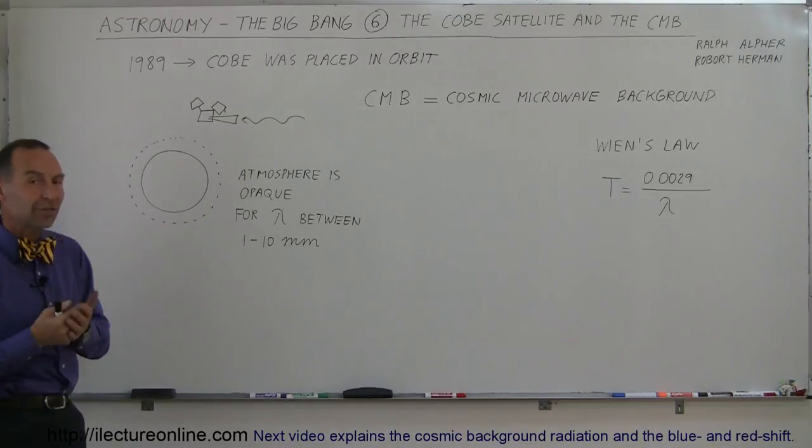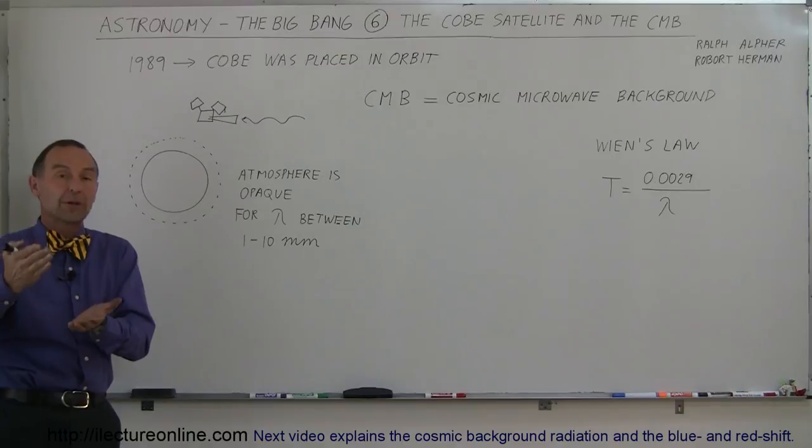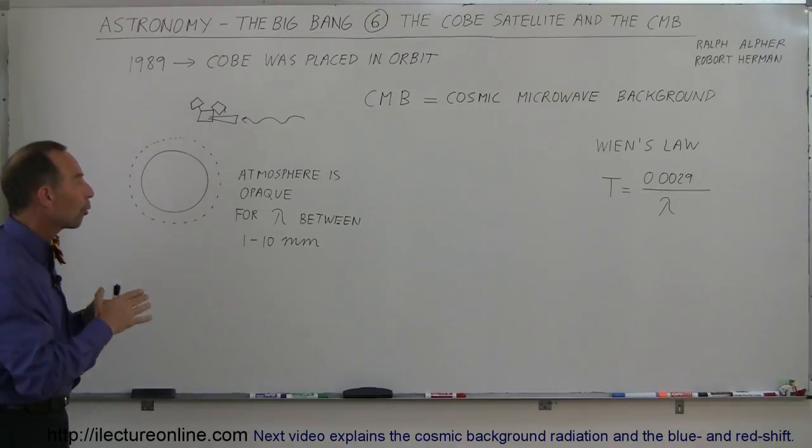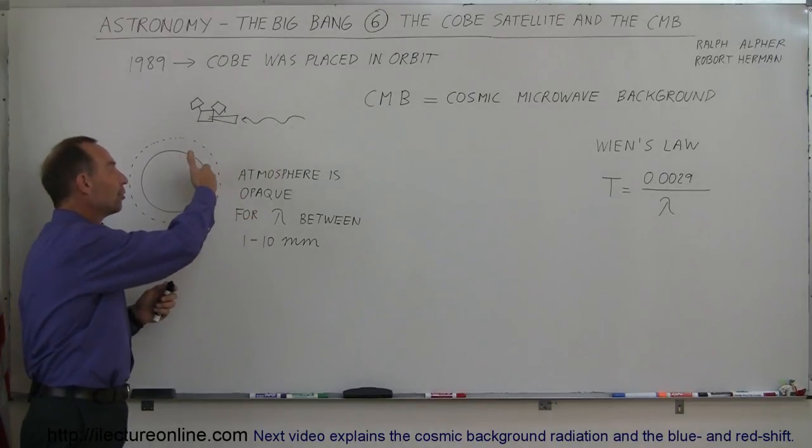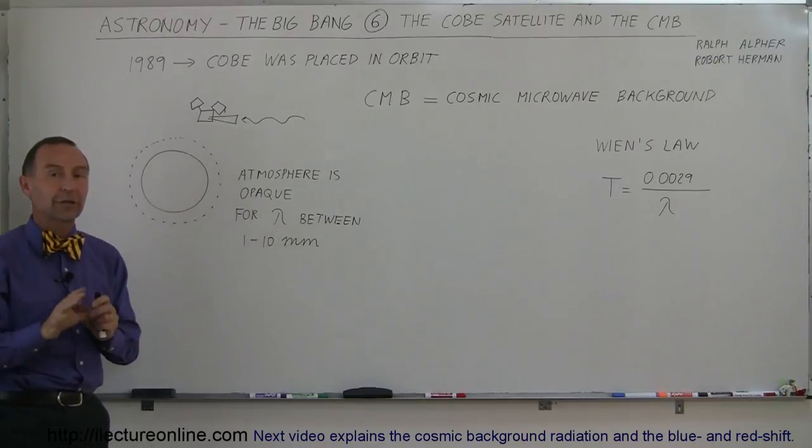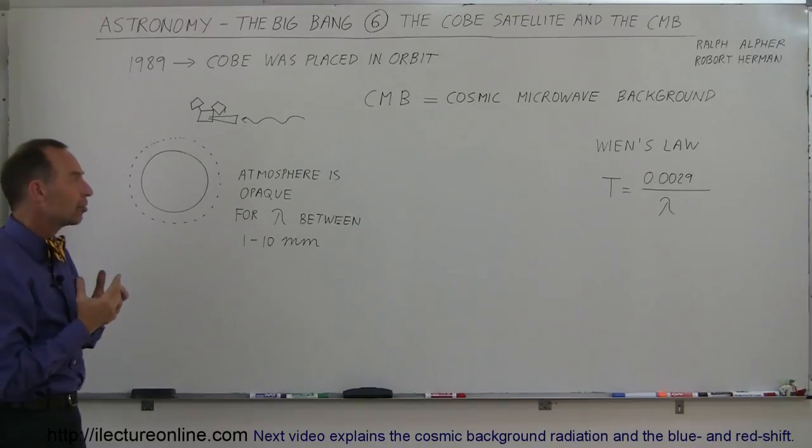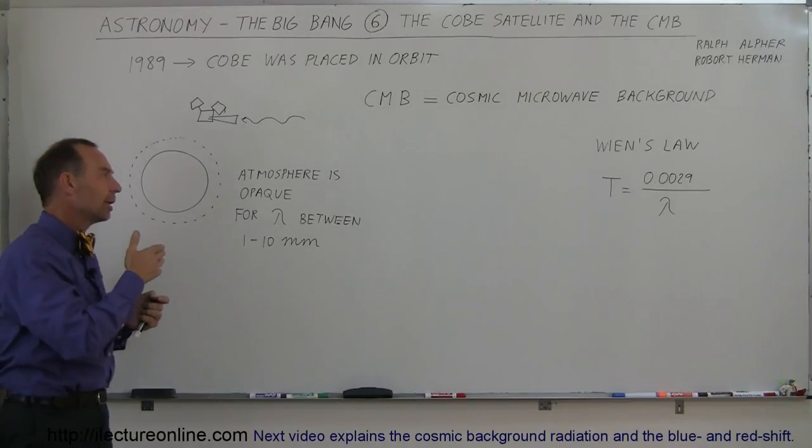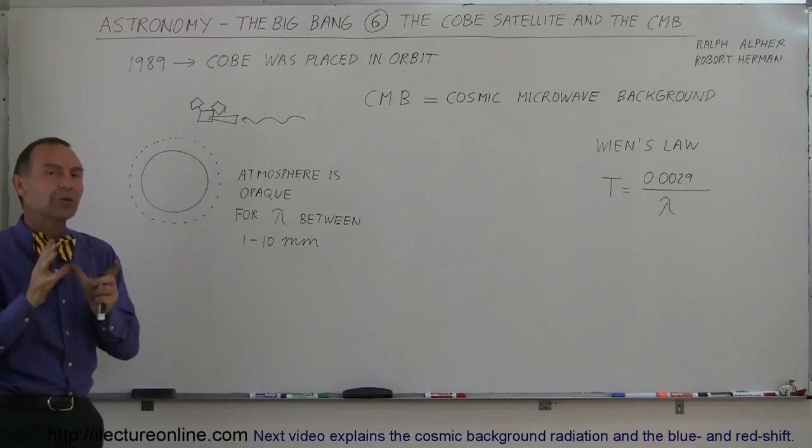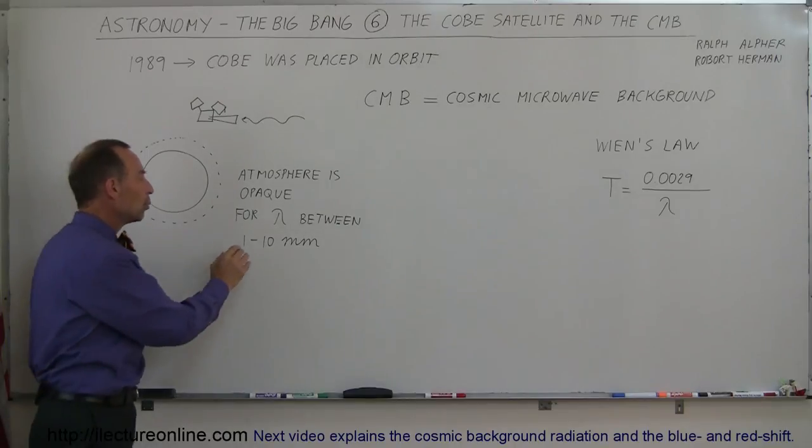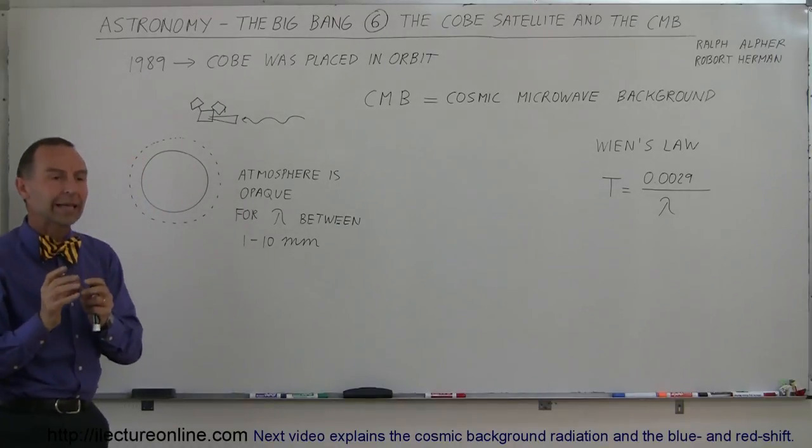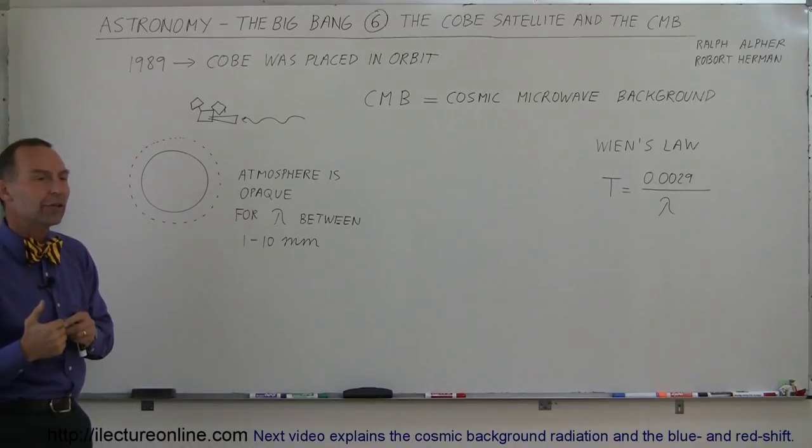Why did we want to do that with a satellite? Well, even though we're able to make measurements on the Earth, a large portion of the radiation moving through the atmosphere was blocked by the atmosphere. It turns out that the kind of radiation that's floating around in space, the cosmic background radiation, the atmosphere is almost completely opaque to that radiation. Anything between 1 and 10 millimeters in wavelength doesn't make it through the atmosphere very easily.